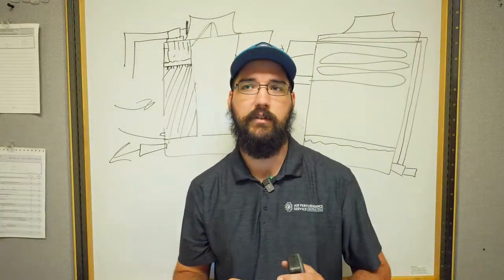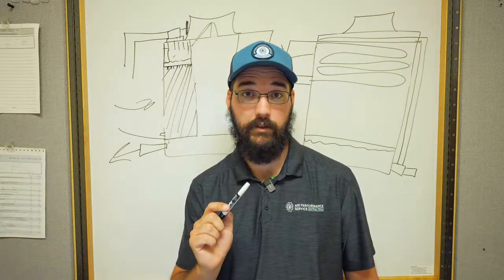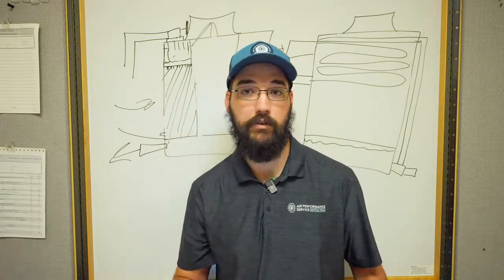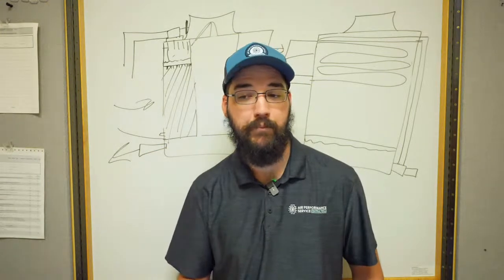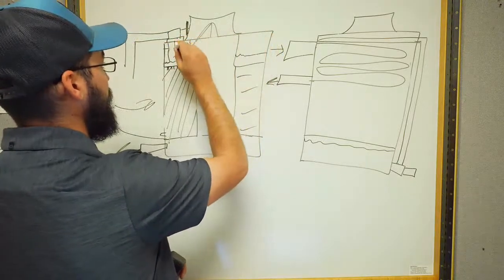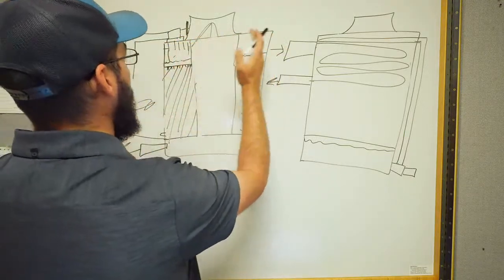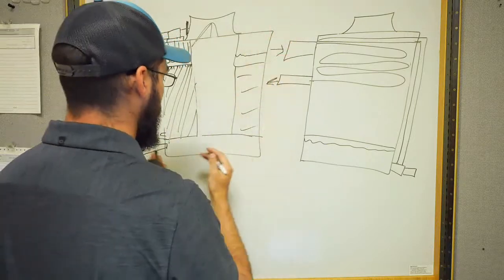Getting back to startup: balancing is part of startup, and how deep you go depends on the style of system and how well it was designed. The piping on the towers also plays a big part. If you're running a tower that has two decks on an open loop, you need the piping split as perfectly as possible.